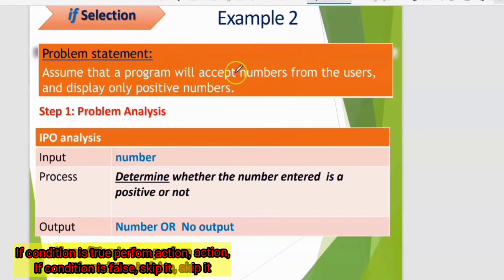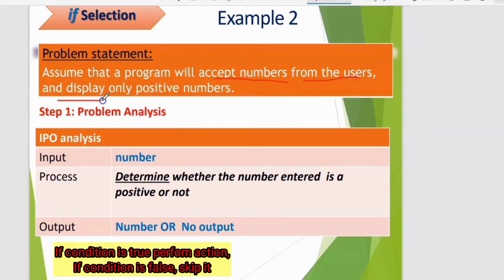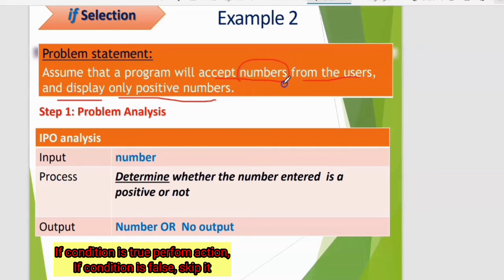Assume that a program will accept numbers from the user and display only positive numbers. First, do the problem analysis — identify input, process, and output. The input is: number. The process is: determine whether the number entered is positive or not. The output is: number, or no output.